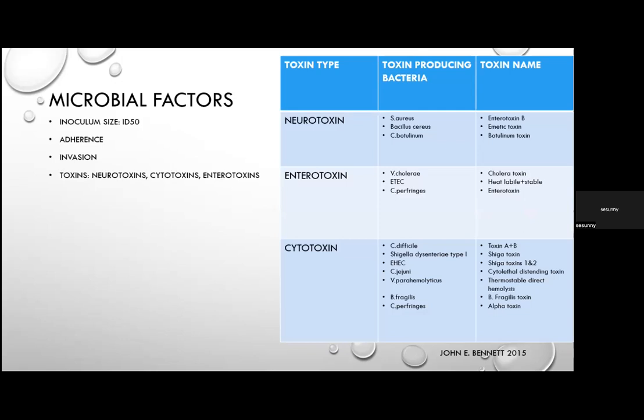Regarding microbial factors: the concept of ID50 — the median infective dose required to infect 50% of a population — depends on gastric acidity, intestinal motility, prior immunity, and the microbiome. When the ID50 is low, the organism is resistant to gastric acid and as few as 10–100 organisms, cysts, or viral particles can cause clinical disease. The lower the ID50, the greater the chance of person-to-person spread, as seen with Shigella, E. coli, Giardia lamblia cysts, and norovirus.